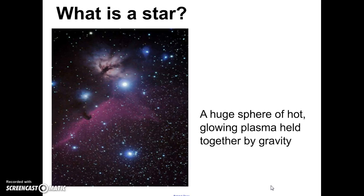You probably don't know very much about plasma, and that's because we don't have plasma on Earth. On Earth, all matter is in the form of a solid, a liquid, or a gas. But in space, there is a fourth state of matter called plasma. A lot of people incorrectly think that the sun is on fire or that stars burn — they don't burn. There's no fire. It is a fourth state of matter known as plasma.